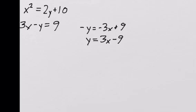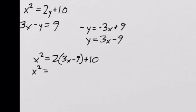And now I'll go ahead and plug that in for y in the top equation. So I get x squared is equal to 2 times 3x minus 9 plus 10. And I distribute the 2. So x squared equals 6x minus 18 plus 10.